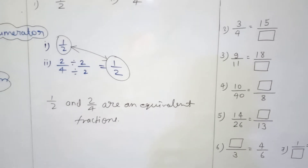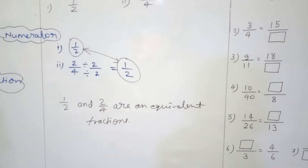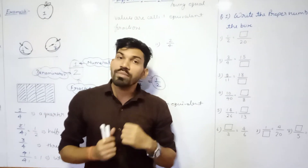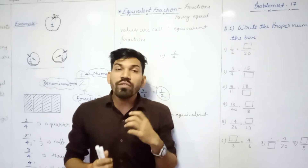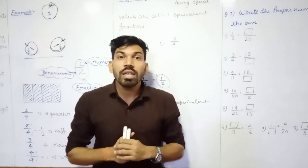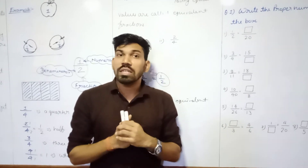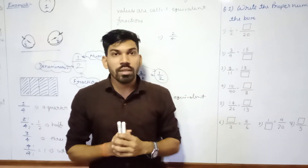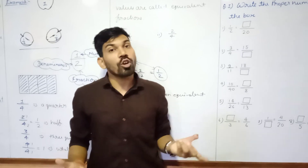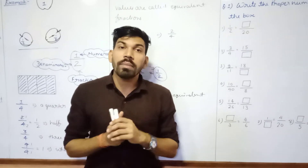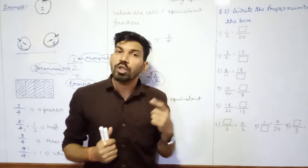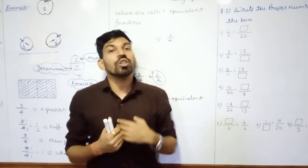This way we can check and identify whether given fractions are equivalent fractions or not. On the basis of this concept, we have our next Problem Set 17 on fractions. The most important rule to remember: whenever we perform any mathematical operation on a fraction, we have to do the same to both the numerator as well as the denominator.